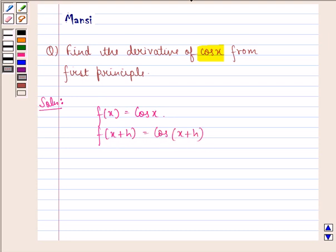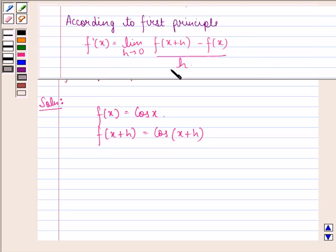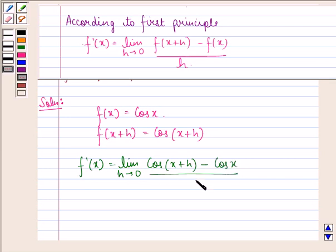Now we apply the first principle. So we get f'(x) is equal to limit h approaching 0, cos(x+h) minus cos x divided by h.